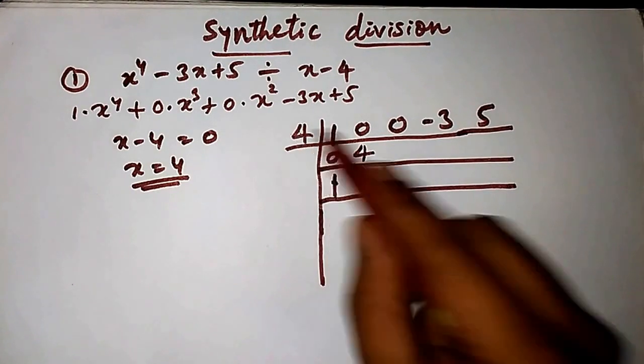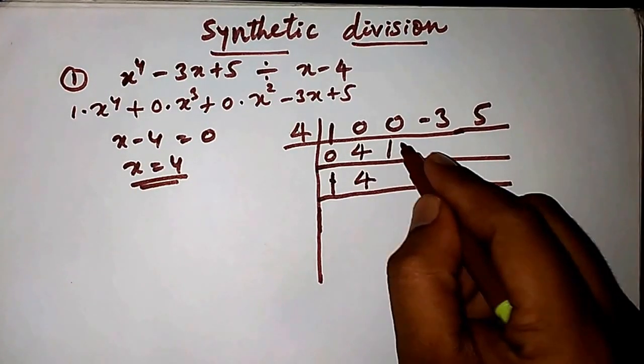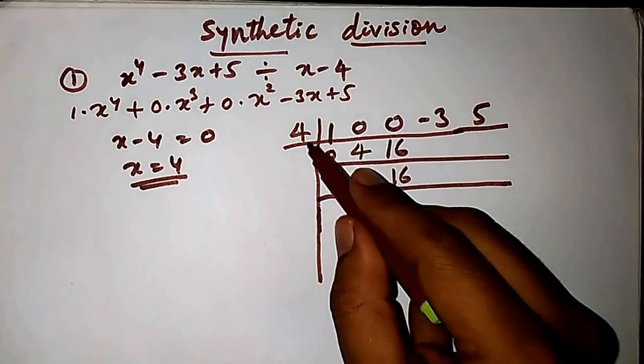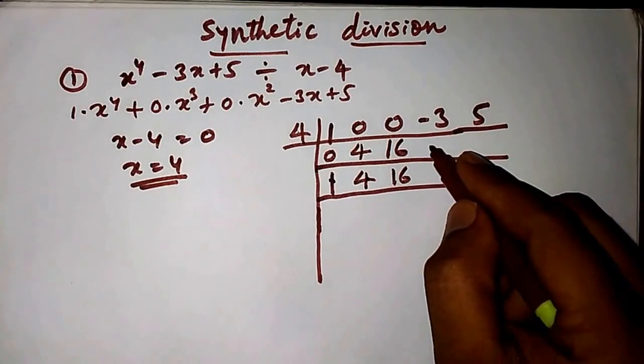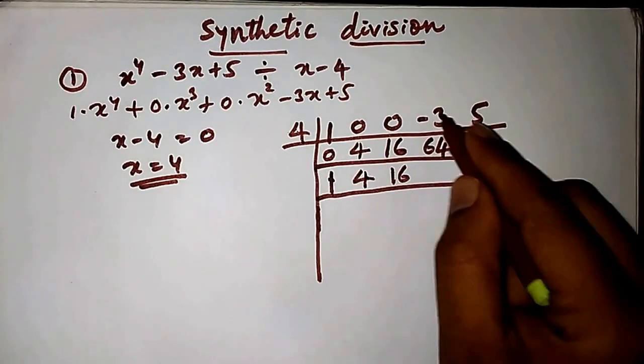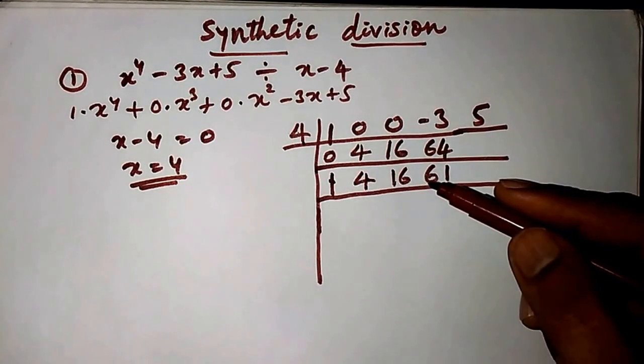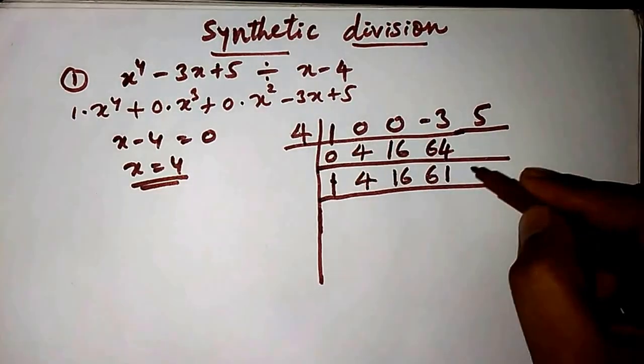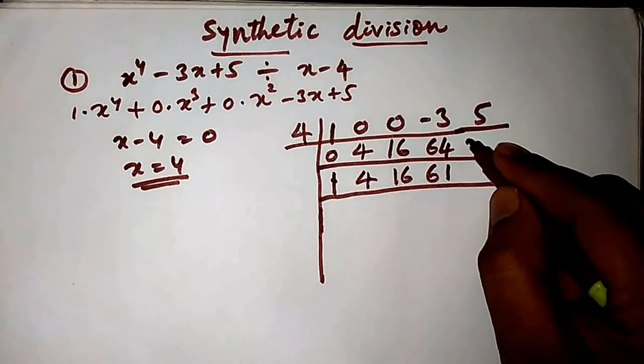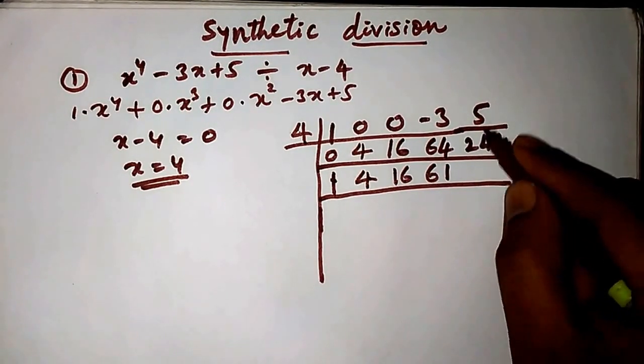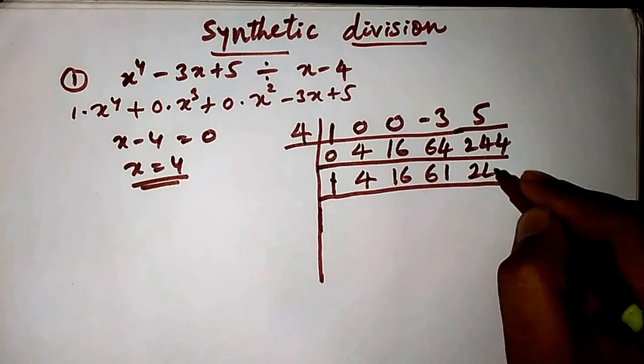Next, 4 times 4 is 16. 0 plus 16 is 16. Then 4 times 16 is 64. 64 minus 3 is 61. Then 4 times 61 is 244. 244 plus 5 is 249.